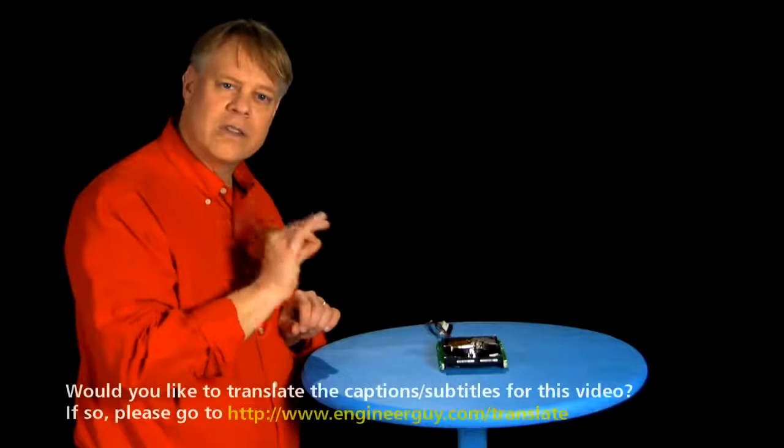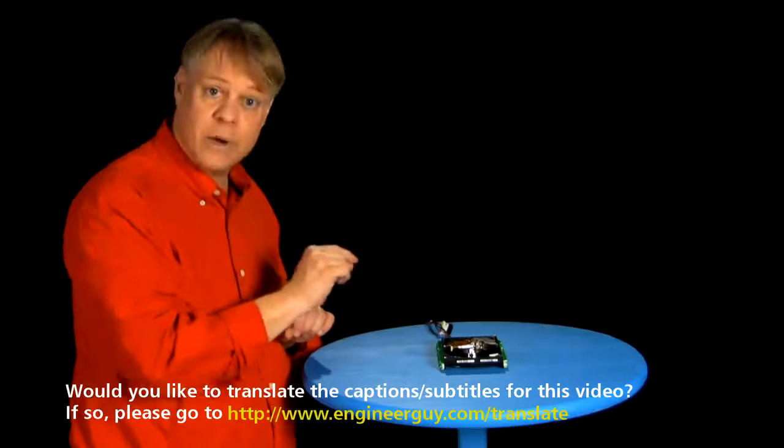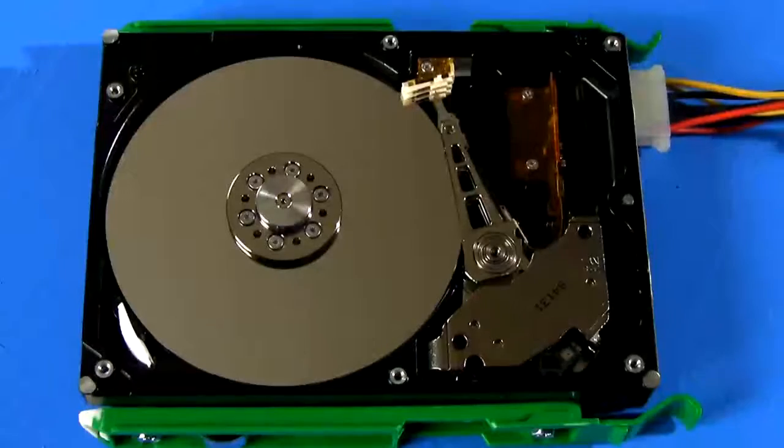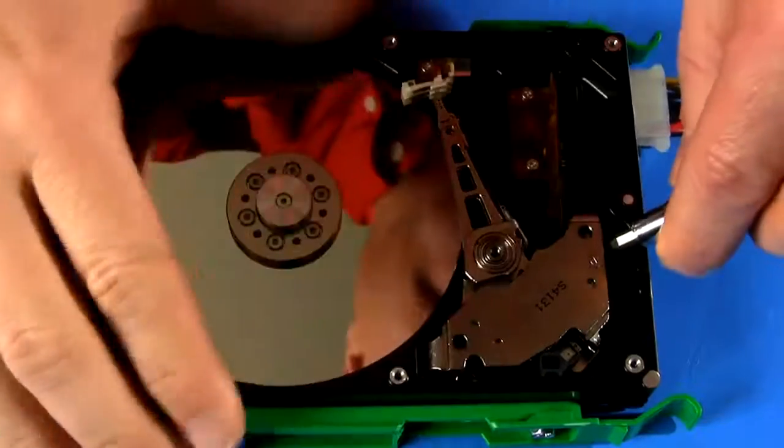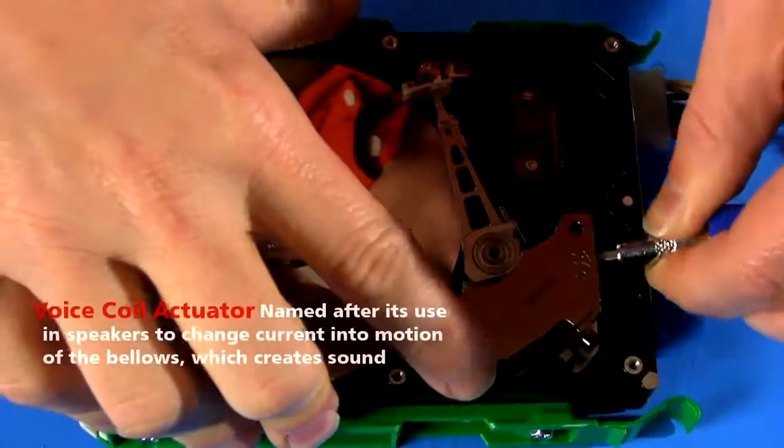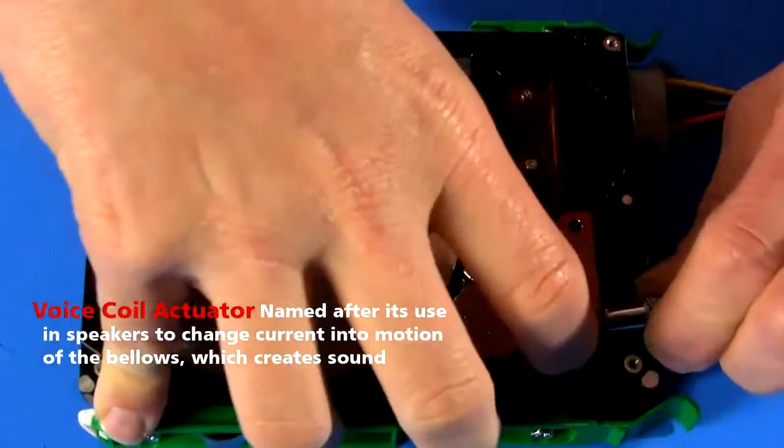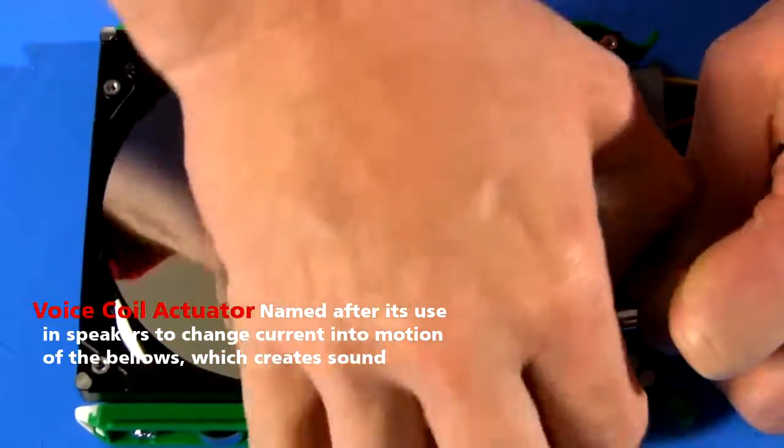The key focus lies in being sure that the head can precisely, error-free, read and write to the disk. The first order of business is to move it with great control. To position the arm, engineers use a voice coil actuator. The base of the arm sits between two powerful magnets. They're so strong, they're actually kind of hard to pull apart.